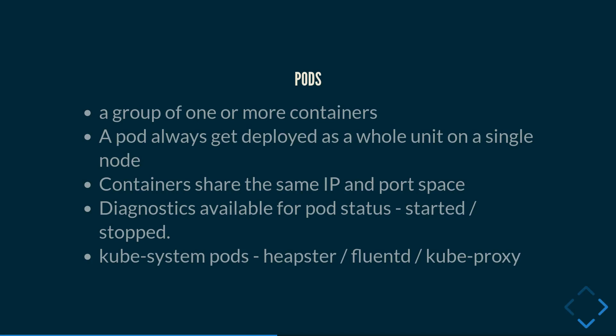So then we have the actual pods. A pod is a group of one or more containers — for example, a database container and a web server container could be defined as a pod. A pod always gets deployed as a whole unit on a node, so if you have two containers in a pod, they will always be running on the same node. Containers within a pod share the same IP and port space, and there is also additional diagnostic metadata available, such as whether it started correctly, if it stopped, or what errors it has.